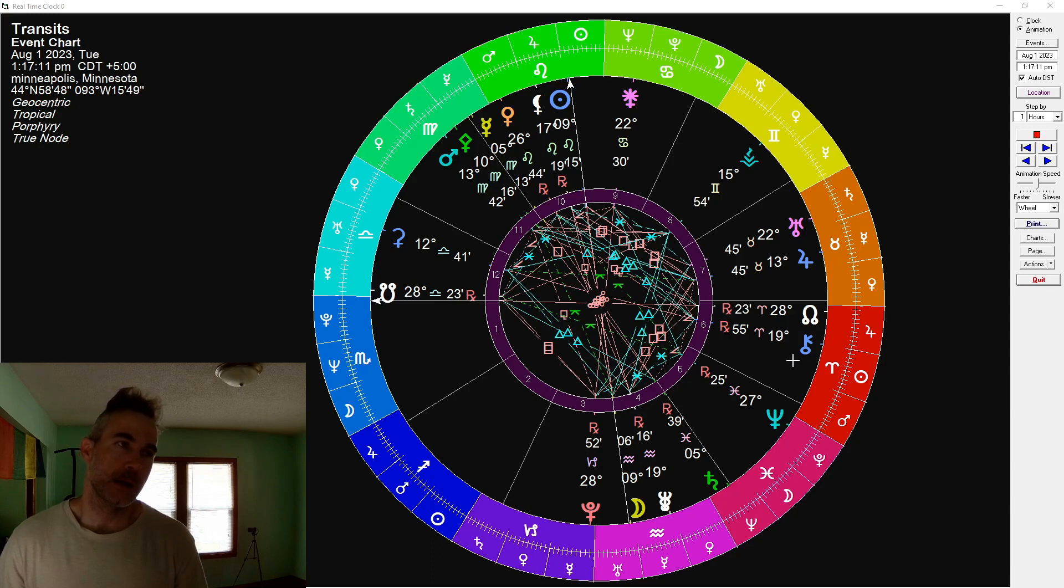Chiron trining black moon Lilith. The Yod still in effect with Venus and Neptune and Pluto. Chiron trining black moon to overcome the limitations of what has been through what I've felt, the information that I've been aware of. Virgo.